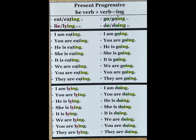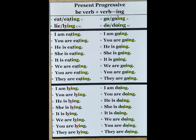Number two: if the ending is I-E, we need to drop the I-E and add Y-I-N-G. For example, lie — lying. I am lying. You are lying. He is lying. She is lying. It is lying. We are lying. You are lying. They are lying.